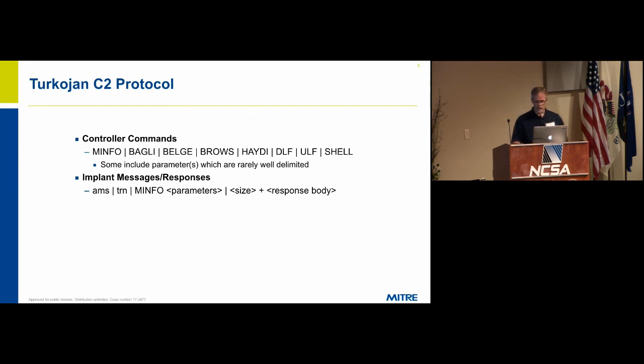The first protocol we looked at is one called Turkojan. Very simple, clear text protocol. It has a number of controller commands that come from the controlling machine. These include parameters which are rarely well-delimited. This is one of the first challenges we ran into. Bad actors do not know how to write protocols. That's one of the first difficulties we ran into.